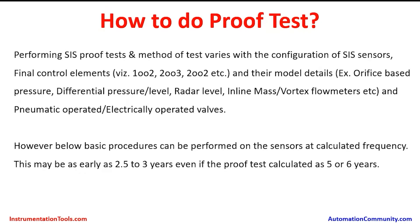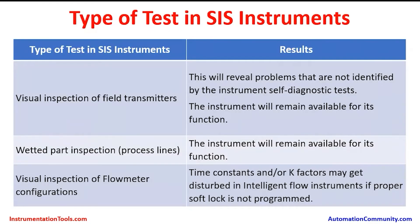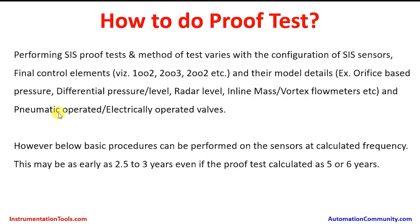Performing SIF proof tests — the method of test varies with the configuration of SIF sensors and final control elements, such as 1 out of 2, 2 out of 3, 2 out of 2, etc., and their model details — for example, RF phase-based pressure, differential pressure level, radar level, inline mass flow meters, vortex flow meters, and pneumatically operated valves. For each type of instrument and valve, the testing may be slightly different and will also vary based on the type of configuration.